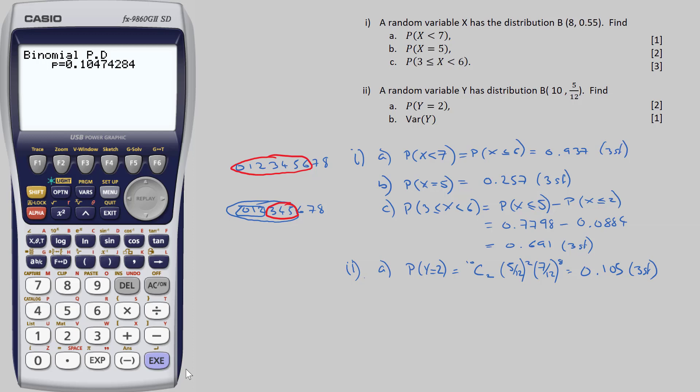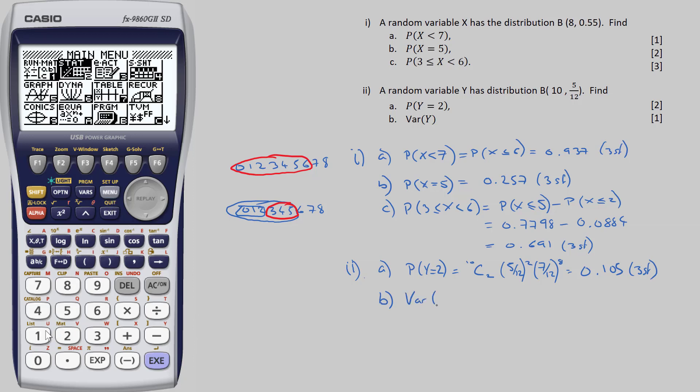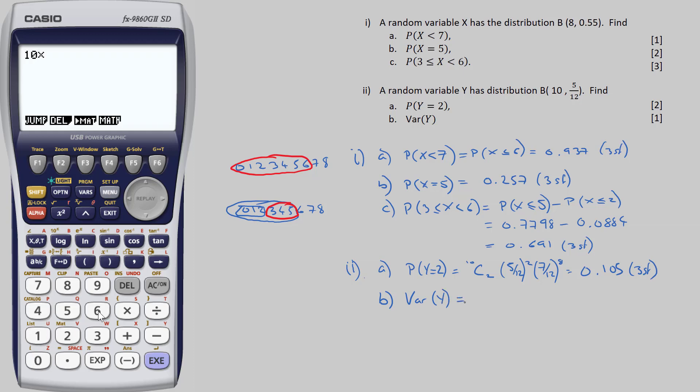Variance of a random variable following a binomial distribution is given by the formula variance equals n, p, q. The calculator won't do this for us strangely, so we'll have to type it in ourselves. So I'll quickly switch into the maths mode. The variance of y here is n, p, q, so 10 times 5 twelfths times 7 twelfths, which is 175 over 72.